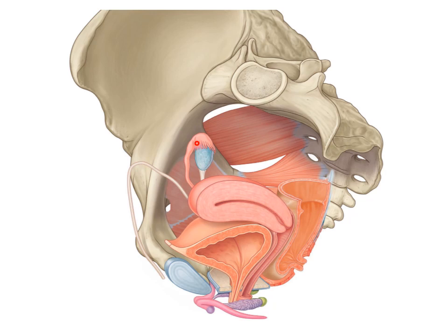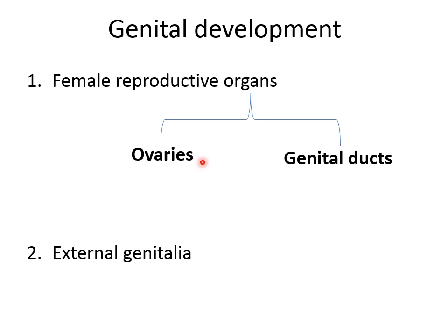The organs we will talk about are the ovary, the uterus, the vagina, and the fallopian or uterine tube. The female reproductive organs include the ovaries and the genital ducts. The second part of female genital development is the external genitalia, which will be discussed in the next lecture.